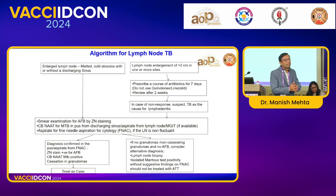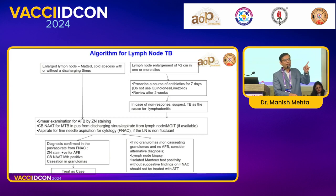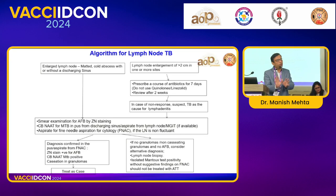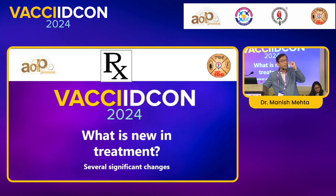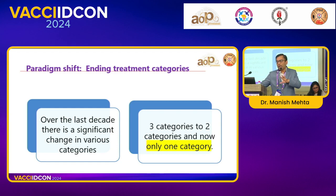Now treatment — what is new? The best thing in treatment is there is now a single regimen for all cases of tuberculosis, whether newly diagnosed, retreatment, pulmonary, or extra-pulmonary: 2HRZE plus 4HRE. Except for bone, joint, and neurological TB, where the maintenance phase is 8 months instead of 4 months. Drug doses are slightly increased. Important: if it is a retreatment or treatment failure case, first check for drug-resistant tuberculosis before treating. Fixed drug combinations are available from the government according to the weight of the child, making it easy to prescribe one or two tablets.